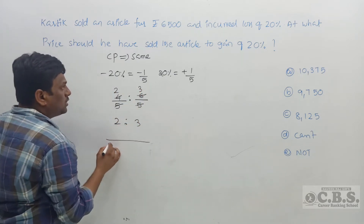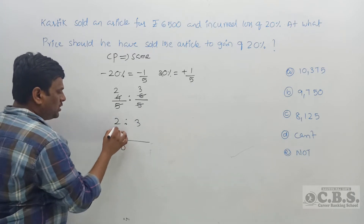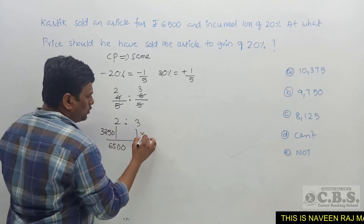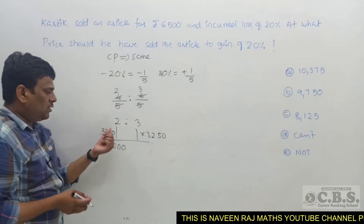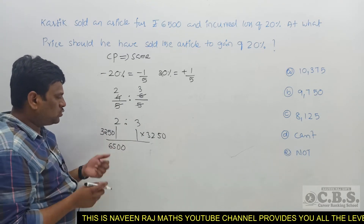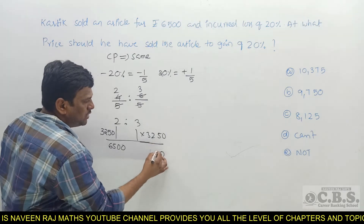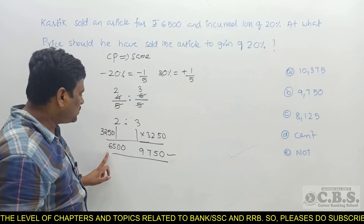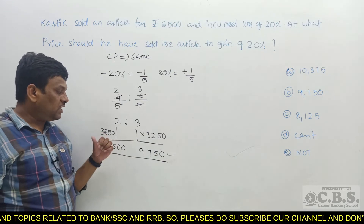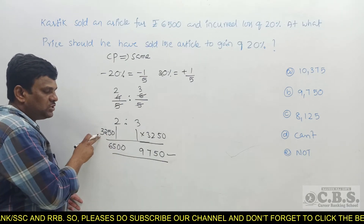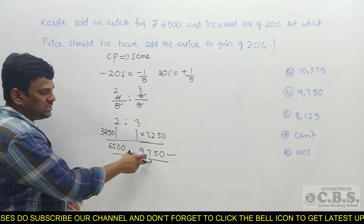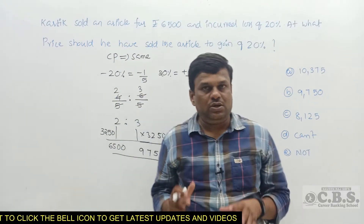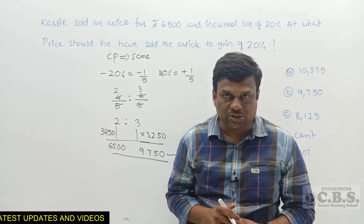The ratio of the two selling prices is 4 to 6, which simplifies to 2 to 3. The first selling price given is 6,500, which equals 2 parts. So one part is 3,250. Three parts is 3,250 × 3 = 9,750 rupees. Alternatively, add 6,000 + 3,000 = 9,000 and 500 + 250 = 750 to get 9,750. When cost price is the same, the fraction-ratio concept gives the answer in one line.